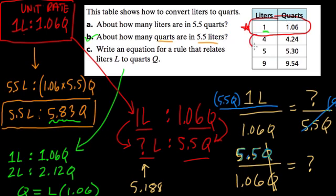1 liter times 1.06 would give you the number of quarts. Here, 4 liters times 1.06 would give you 4.24 quarts. And that's at least part of the reason why it was so easy to answer question B.